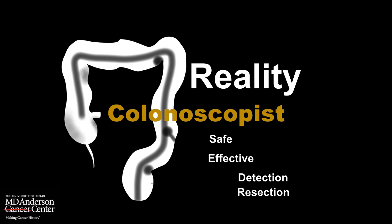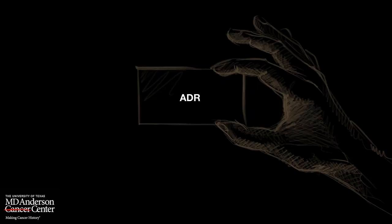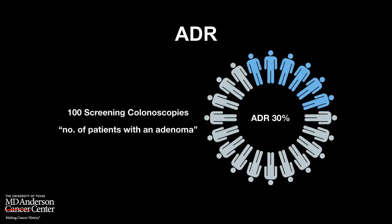So let's talk about a few definitions. ADR, or adenoma detection rate, means the number of patients with an adenoma if you screen 100 average-risk patients for the first time. As you can see here, ADR is 30%, meaning 30 out of 100 were found to have an adenoma.